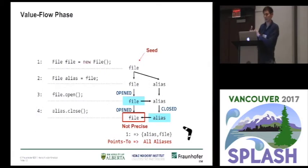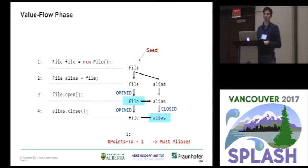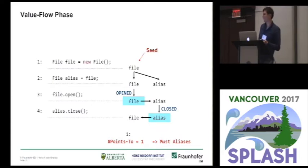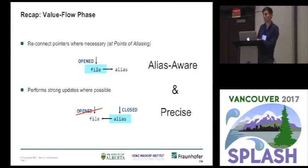We are not precise yet, but we are complete — because file is open or closed, and alias is closed as we expected. We can further elaborate on that: if we notice that the size of the points-to set we computed is just 1, we know that both queries we triggered have exactly one allocation site, and therefore they must alias. That means we can basically remove those edges from the graph, and if we do so, we have full information — file after line 3 is open, as is alias, and after line 4 both alias and file are closed. To sum up the value flow phase: its responsibilities are to backconnect the aliases and also perform strong updates by removing those edges.